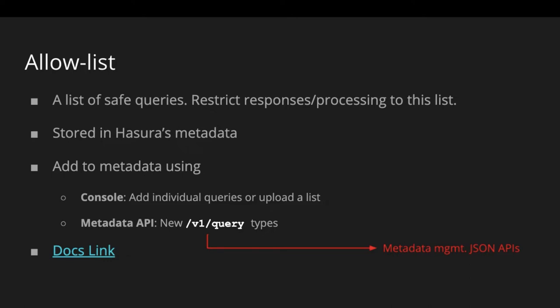As part of this release, we've added new types to the v1 query endpoint, which is the JSON API, and that will let you create the metadata APIs. I have a link to docs primarily because I want to talk about a couple of caveats.